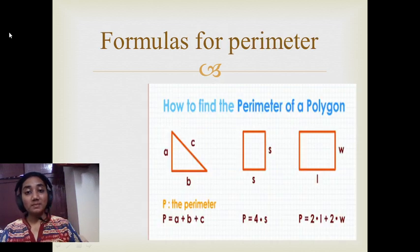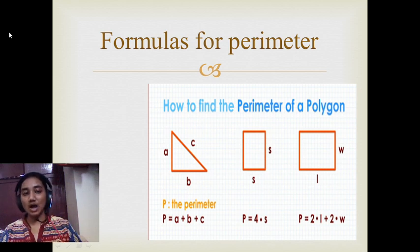Now the formulas for perimeter. Perimeter of triangle is just the outer parts, which is named as A, B, C, so the sum of all of them. Perimeter of square is 4 into S. Perimeter of rectangle is 2 into L plus B. On expanding, we get that perimeter. Breadth is also termed as width.